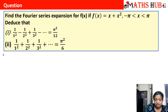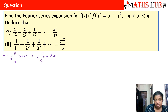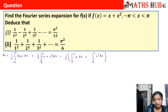We first need to calculate a₀. According to the interval, a₀ is 1/π times the integral from minus pi to pi of f(x) dx. Since the function is x plus x², we get the integral from minus pi to pi of (x + x²) dx. We can break this into two integrals: the integral of x dx and the integral of x² dx. Now x is an odd function, so its integral from minus pi to pi is always 0.